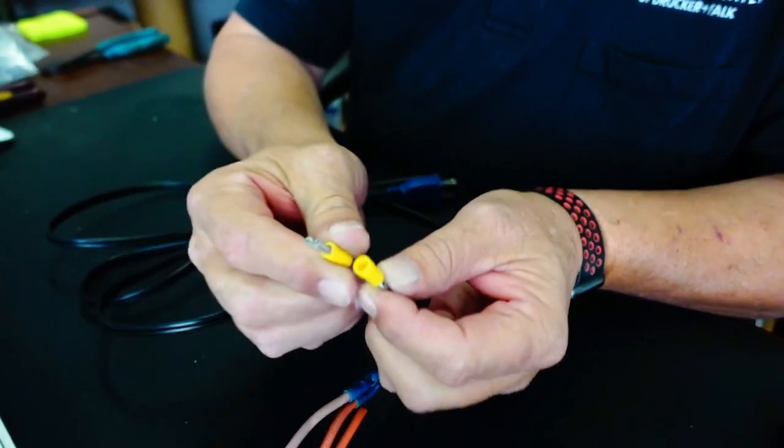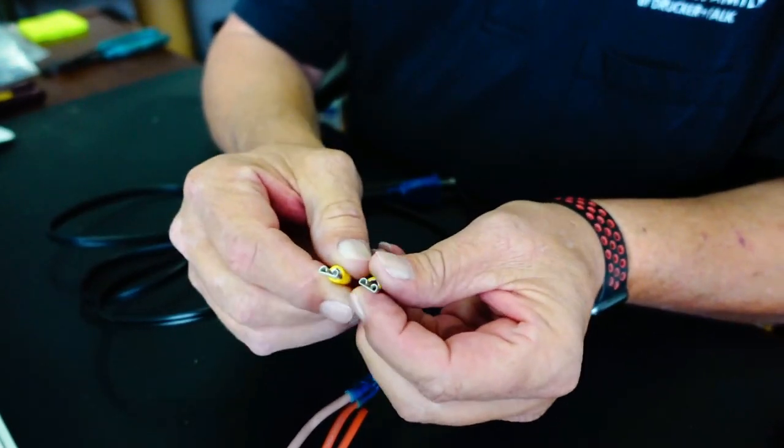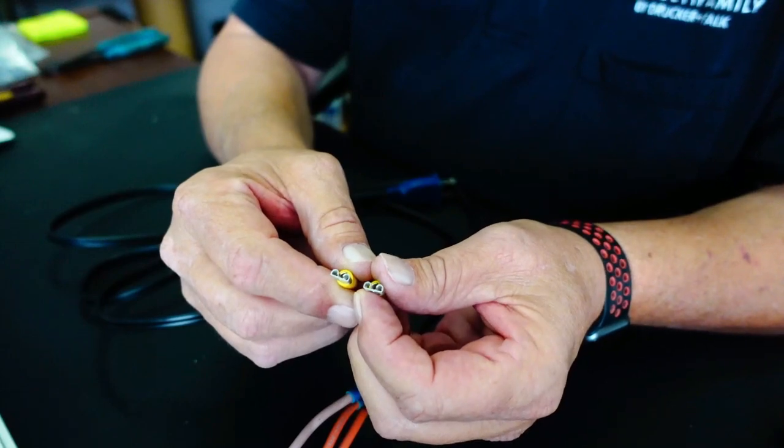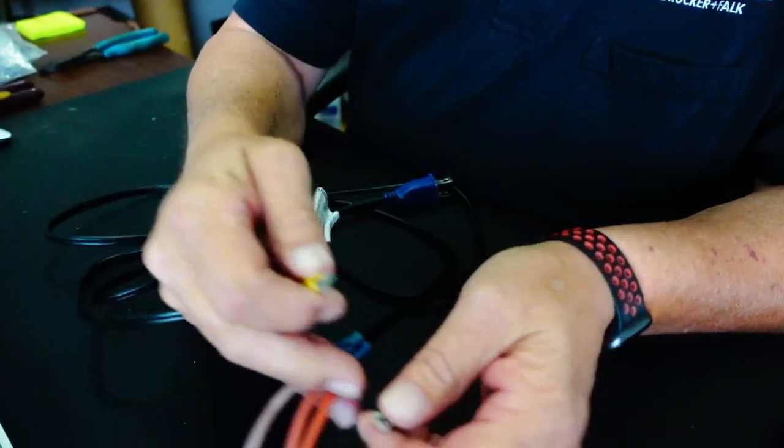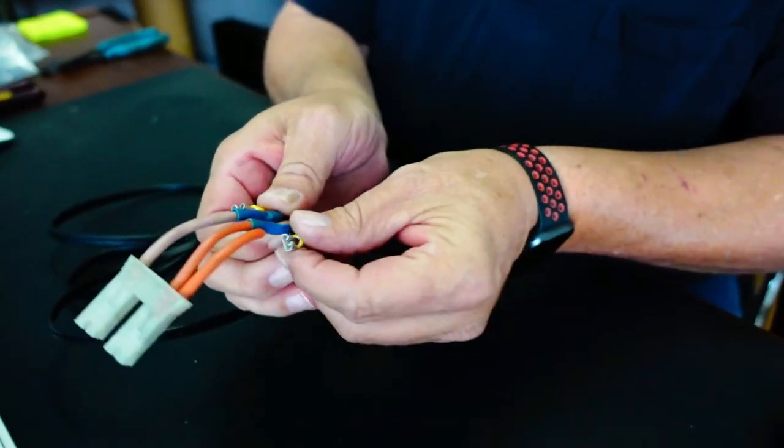If you don't have a molex plug, just get you a couple of these little spade terminals with an insulated back on them and you crimp that on the end of your wire. Takes a little bit more effort to plug these on the coil separately, but it's not that big of a deal. Just get your spade connector, crimp it on your wire like so.